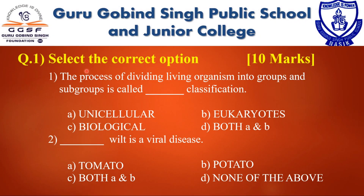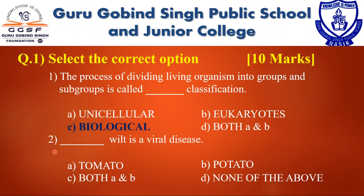Now let's start with the questions. Question 1: The process of dividing living organisms into groups and subgroups is called — classification. The correct option is biological classification. Question 2: Dash wilt is a viral disease. The options are tomato, potato, both A and B, or none of the above. The correct answer is tomato.